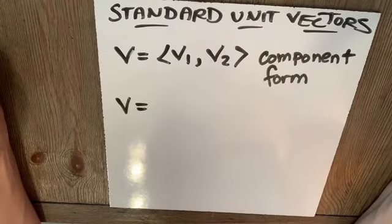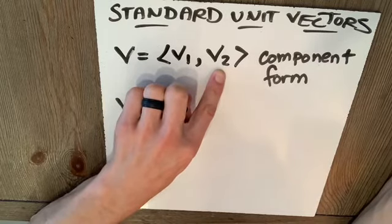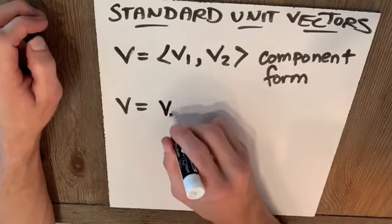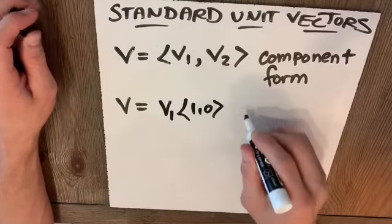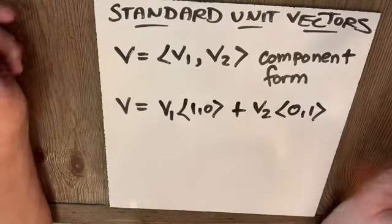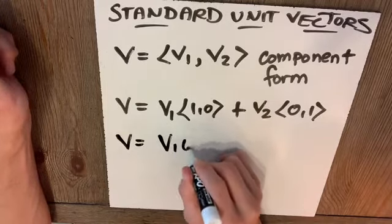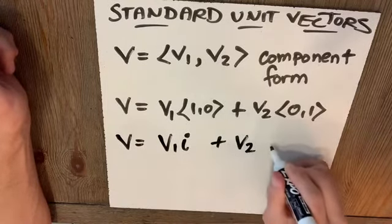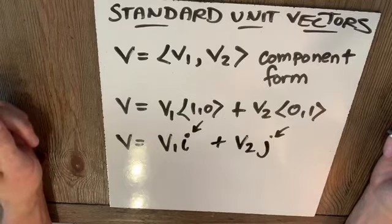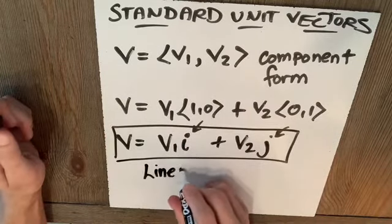If vector v can be written as <v1, v2>, where v1 is its x component or horizontal component and v2 is its y component or vertical component, we call that component form. This v can be written as v1 times <1,0> plus v2 times <0,1>. So v equals v1*i plus v2*j. I just replaced <1,0> with i and <0,1> with j. We call this form with i's and j's linear combination.